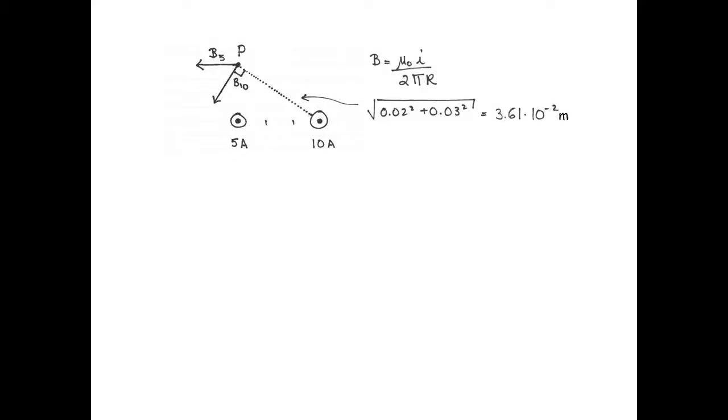The magnetic field of an infinite wire is given by mu-naught multiplied by i over 2 pi r. I've also calculated the distance between the 10 Ampere wire and point P using the Pythagorean theorem. The square root of 2 cm squared plus 3 cm squared is 3.61 cm.